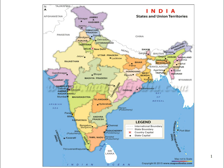The country is divided into 29 states and 7 union territories. The union territories are Lakshadweep, Andaman and Nicobar Islands, Dadra and Nagar Haveli, Puducherry, Chandigarh, and New Delhi. New Delhi is also the capital of India. Chandigarh is the capital of Chandigarh union territory and also the capital of Punjab and Haryana. Puducherry's name was changed from the old name Pondicherry.